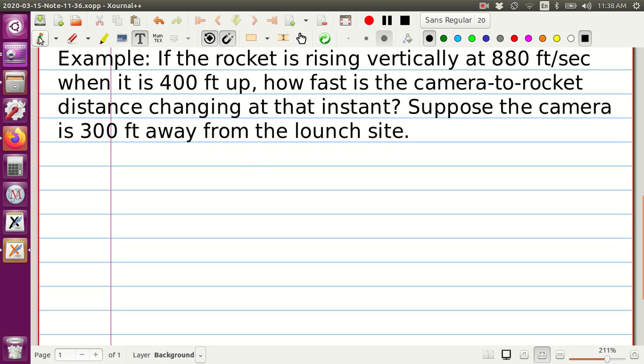So we have a rocket that is flying up and we have a camera over here. The camera is trying to make pictures. And we have a distance from the camera to the rocket, and we know that the camera is located 300 feet away.